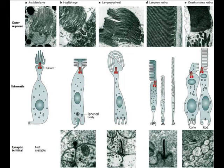These closely related organisms show a great deal of diversity in eye structure, but all clearly evolve from two basic cell types — the rhabdomeric and ciliary photoreceptor cell. In vertebrates, this correlates to rod and cone cells respectively.